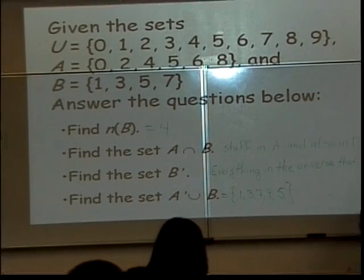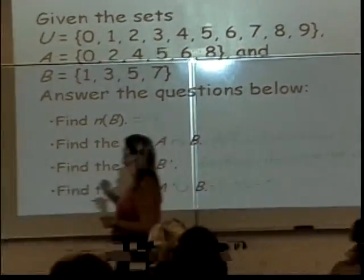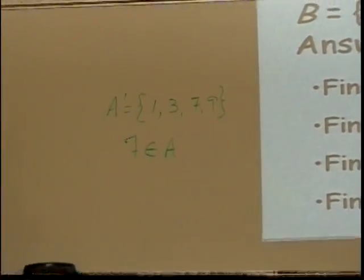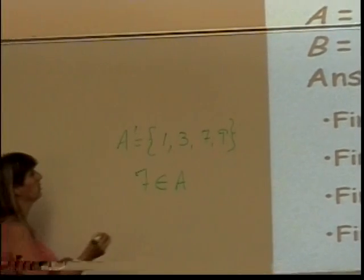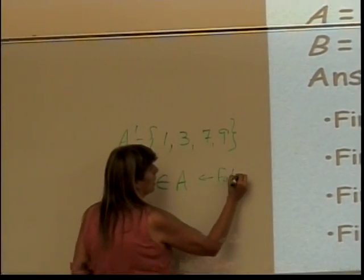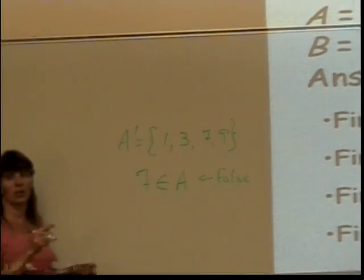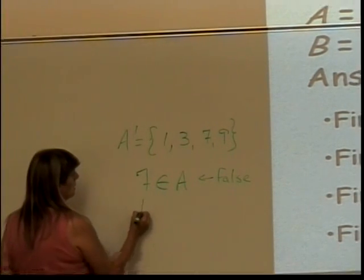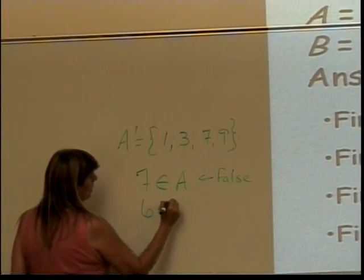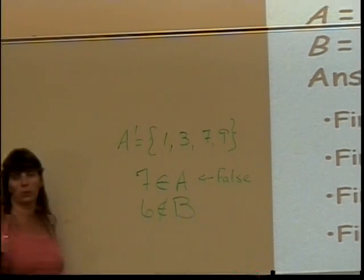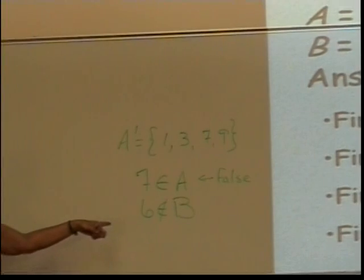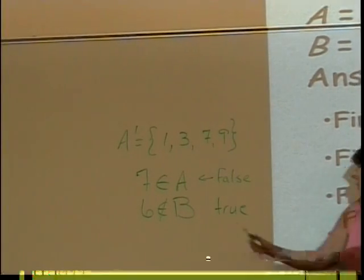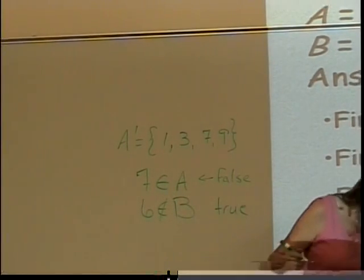Is the following statement true or false? Seven is in A. Is that true or false? False. That's false. Because seven is not in A. What about this one? Six is not in B. Is that true or false? True. That's true. If you look at B, there's no six. So we've got one false statement, one true statement.